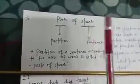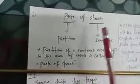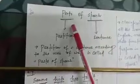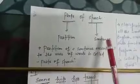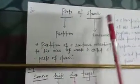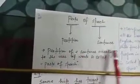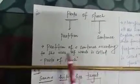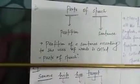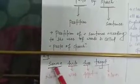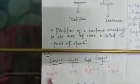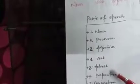Good morning everyone. Today we are going to discuss about parts of speech. What is parts of speech? 'Parts' means partition, and 'speech' means sentence. So we can define parts of speech as: the partition of a sentence according to the uses of words is called parts of speech. For example: 'Senna hits her target' — here 'Senna' is a noun, 'hits' is a verb, 'her' is an adjective, 'target' is a noun. The different types of parts of speech are noun, pronoun, adjective, verb, adverb, preposition, conjunction, and interjection.